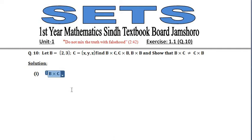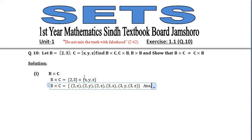Here you can see that the first part is B cross C. The members of B are {2, 3} and the members of C are {x, y, z}. So B cross C equals {(2,x), (2,y), (2,z), (3,x), (3,y), (3,z)}.